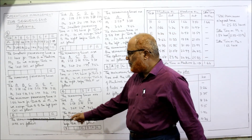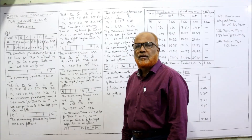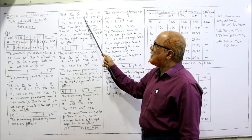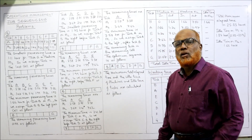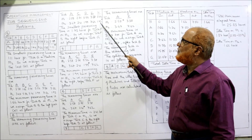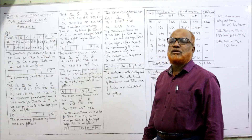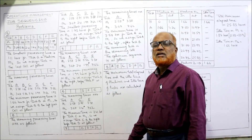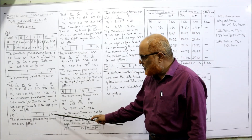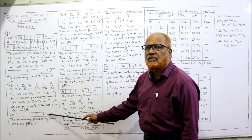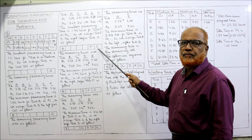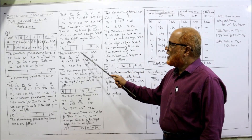Two jobs are completed: B and G. The remaining jobs are A, C, D, E, F. Looking at all their time estimates, the minimum time is 1.73, which is for job F on the second machine. Second machine means assign from the right. G is already on the right, so before G we place F: ...F, G.